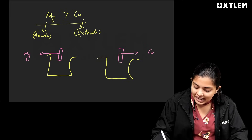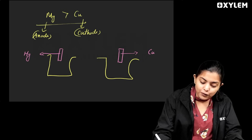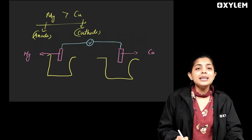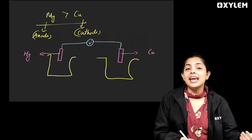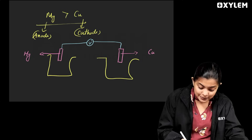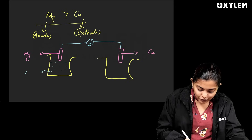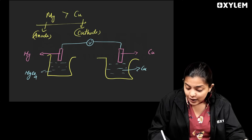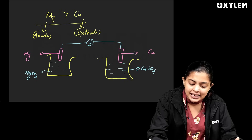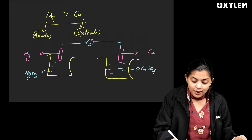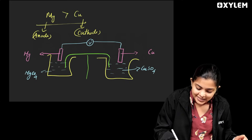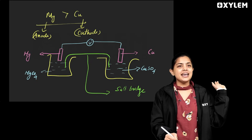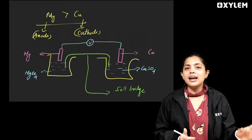The cathode is copper. This is a voltmeter. We get the electrolyte for magnesium — magnesium sulphate. Then MgSO₄ — I will use this electrolyte. I will use copper and copper sulphate as the electrolyte. Now I will use a salt bridge. We will complete the galvanic cell.